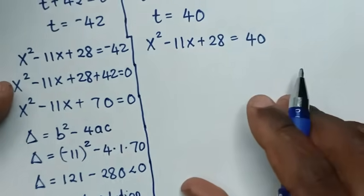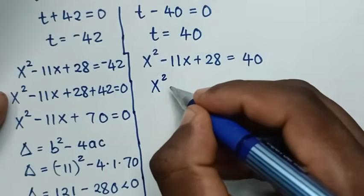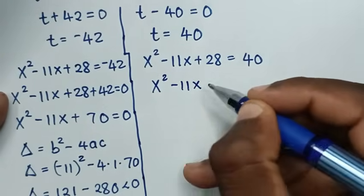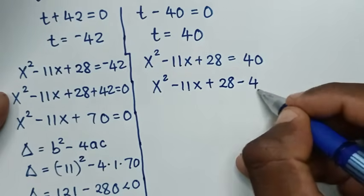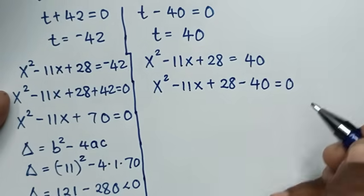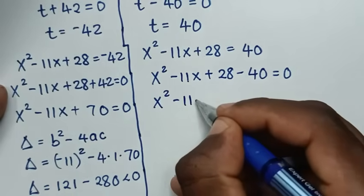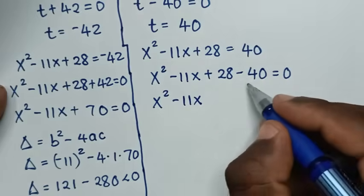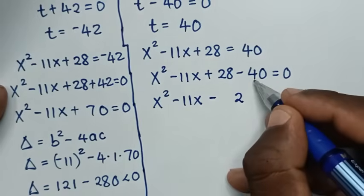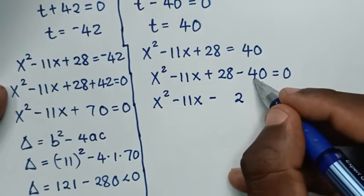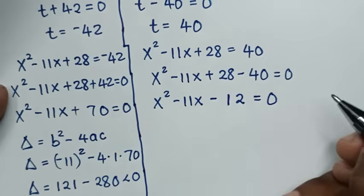For t equals 40: x squared minus 11x plus 28 equals 40. Moving 40 to the left side gives x squared minus 11x plus 28 minus 40 equals 0, which simplifies to x squared minus 11x minus 12 equals 0.